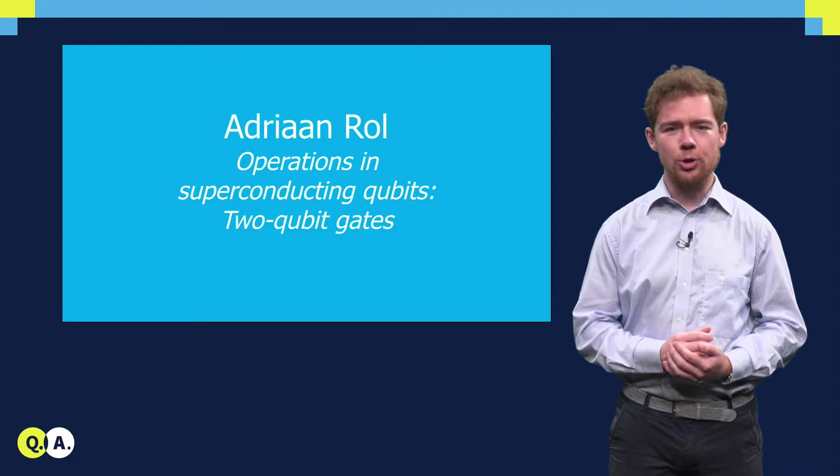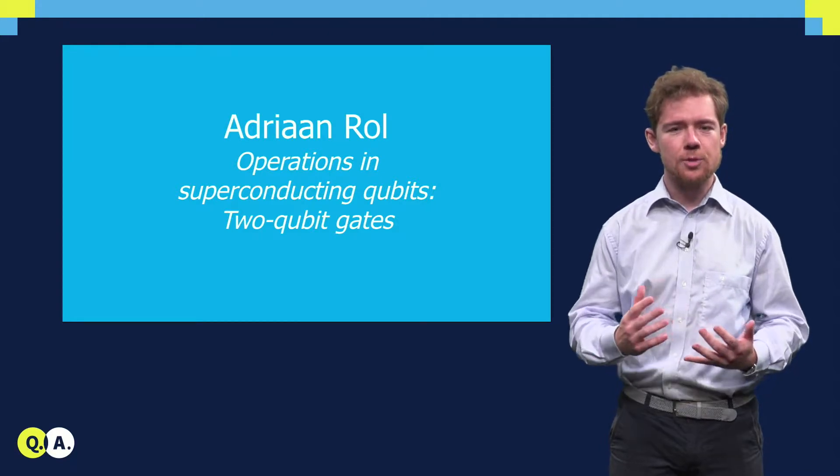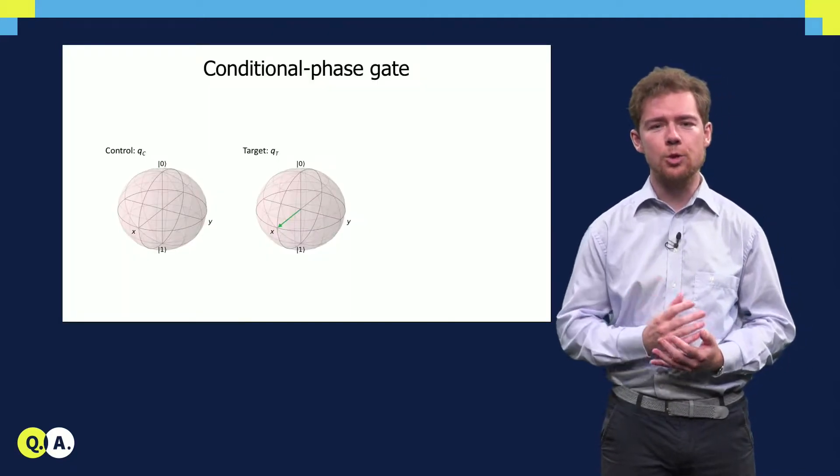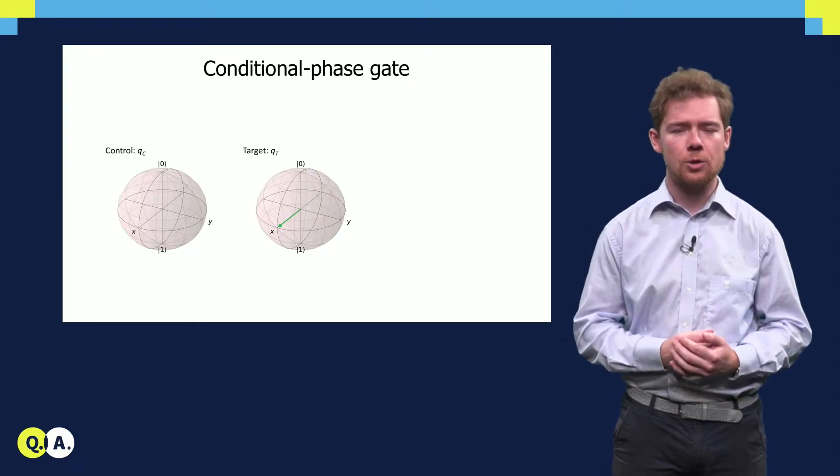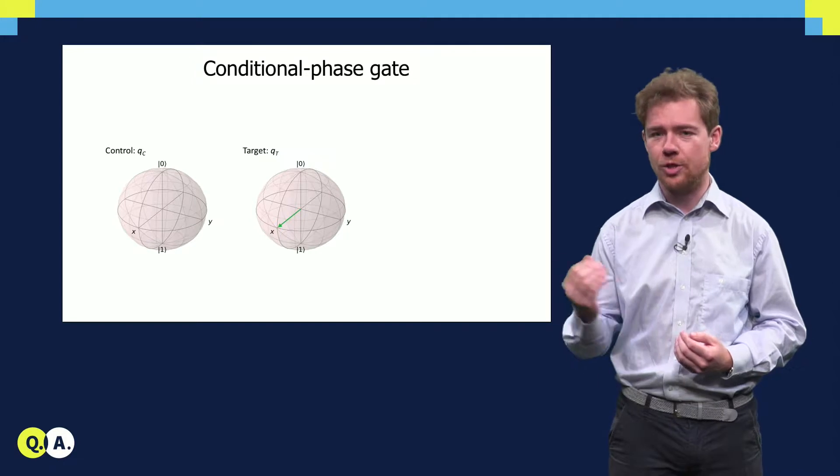Interactions between qubits are controlled using two-qubit gates. In transmon qubits, the two-qubit gate that is used to form a universal gate set is the conditional phase gate, also known as the C-phase or C-Z gate.